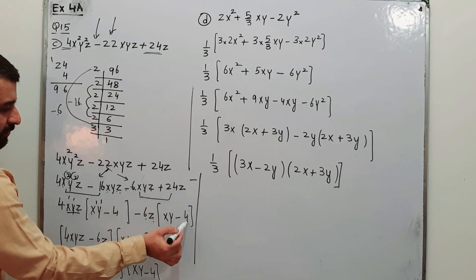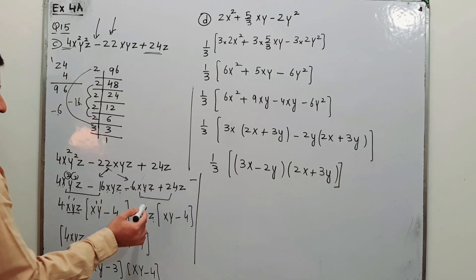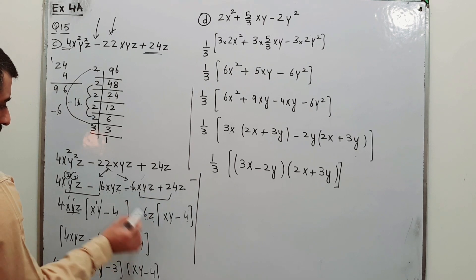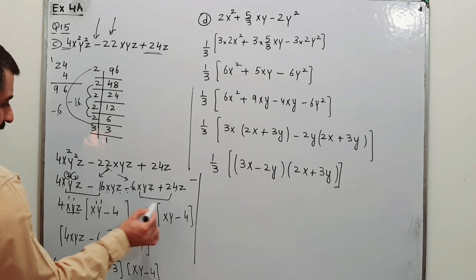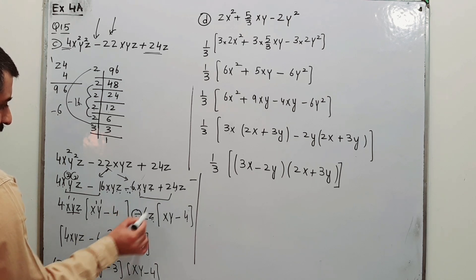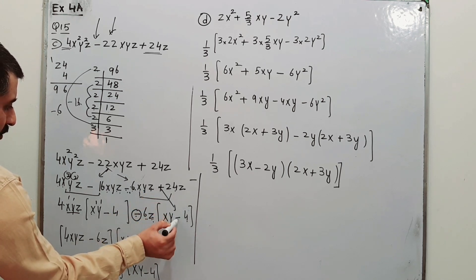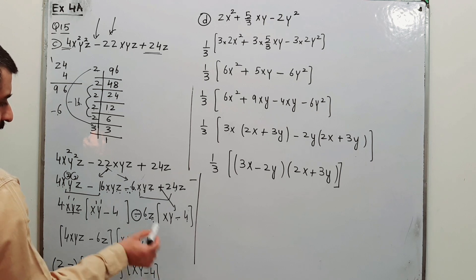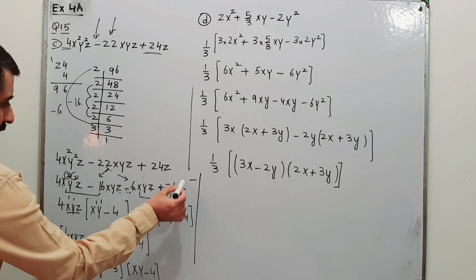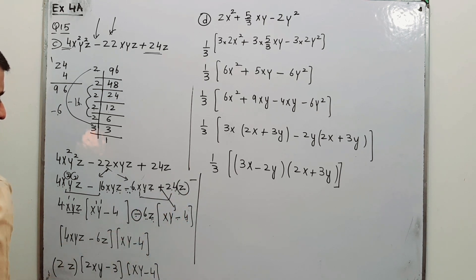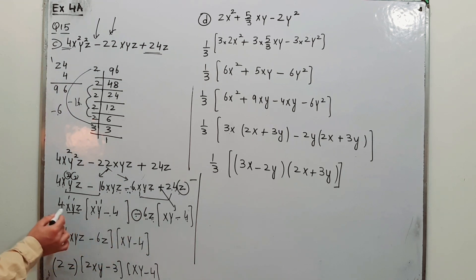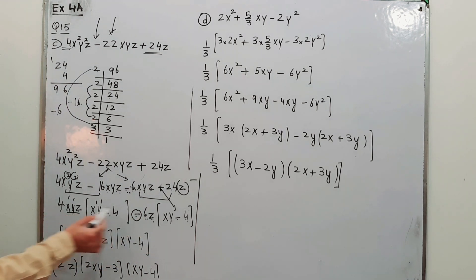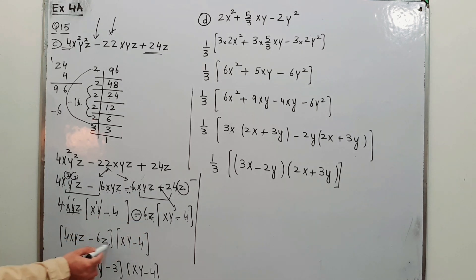From the last two terms, 6z is taken out as common — 6 and z are both taken out. From 24z, 6z goes 4 times. Because minus is taken out as common, the sign inside the bracket is changed from minus to plus. So we get 6z times (xy minus 4) — wait, the bracket becomes (xy minus 4), giving the factors (xy minus 4) and (4xyz minus 6z).